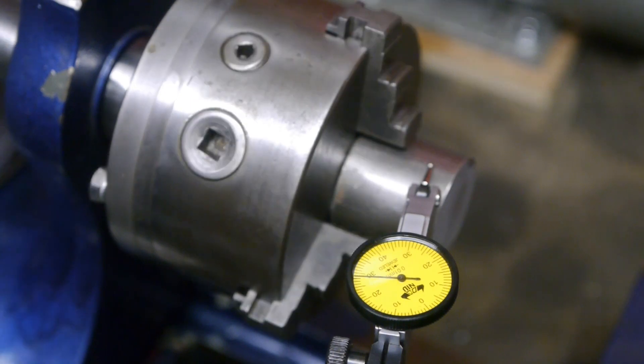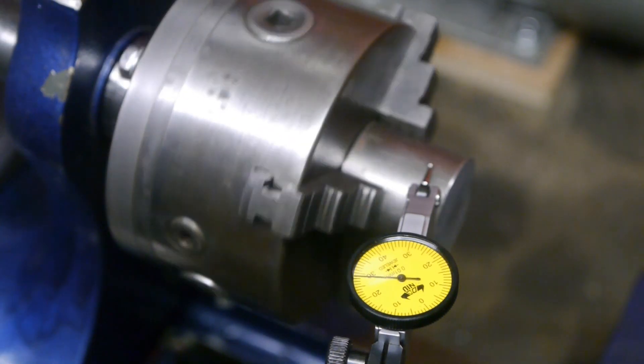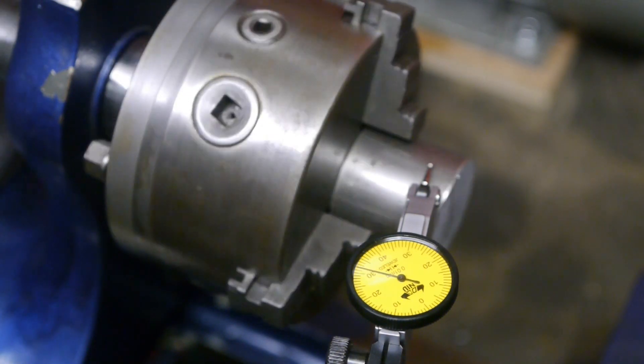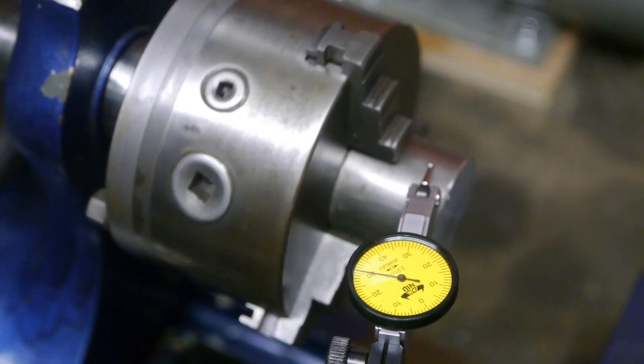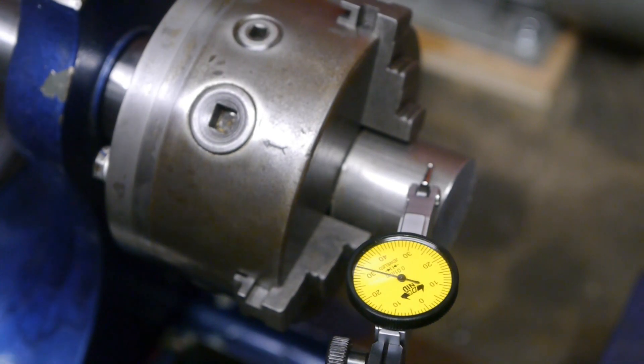I think this is good enough. As you can see, the chuck is running much better than during the previous test. I think it had about three tenths runout before, and you can dial in this chuck using these adjustment screws. This is actually quite an interesting chuck; it was made using a patent by a Dutch inventor from 1946.